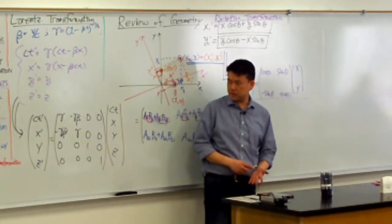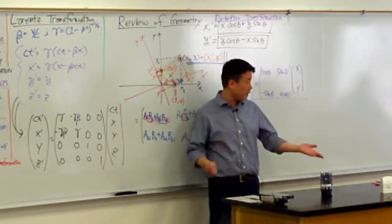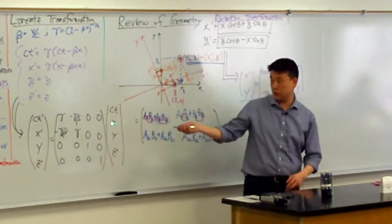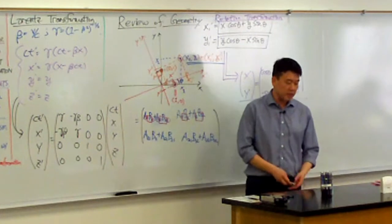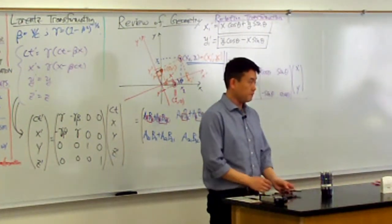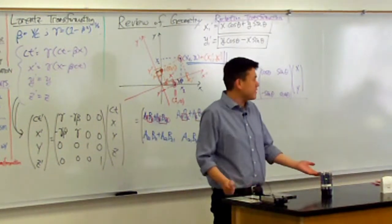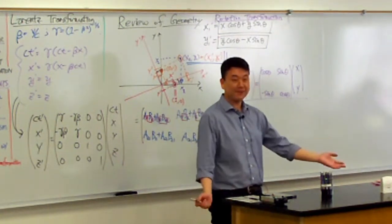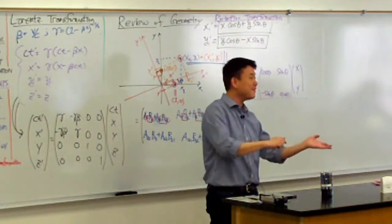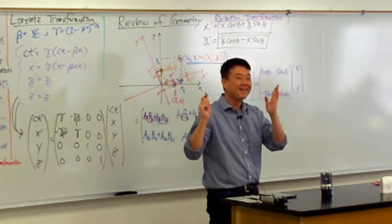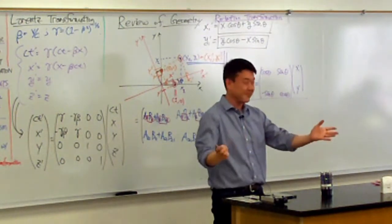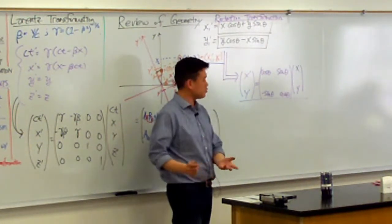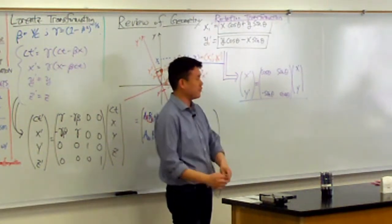What I want to point out are some features that become more apparent once you make this comparison of the rotation transformation with the Lorentz transformation. It's something called an invariant. When you hear the word invariant, what do you think that means? Doesn't change — that's what it sounds like. Variant with the 'in', so it doesn't change. That's what it is.